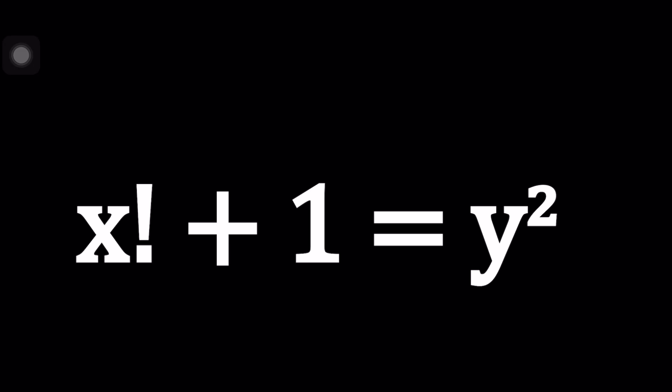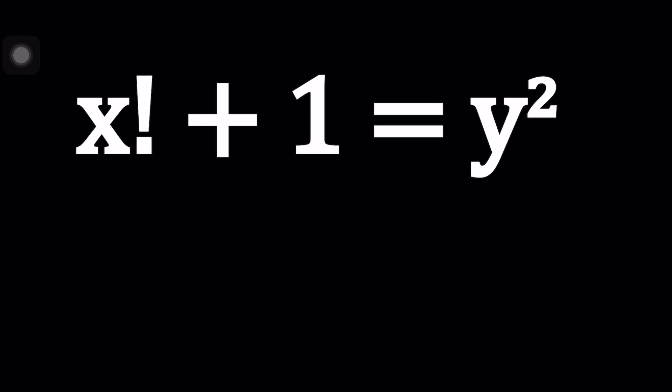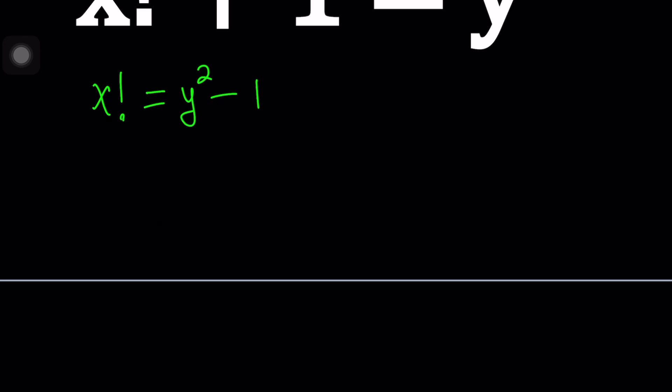The first thing that I attempted when I saw this problem was I noticed that if I subtract one, if I put the one on the right hand side, I'm getting a difference of two squares which might be helpful in some cases. Y squared minus one is a difference of two squares and it's factorable.